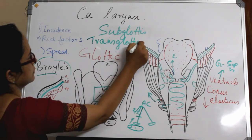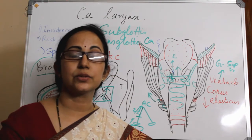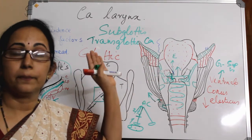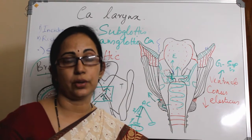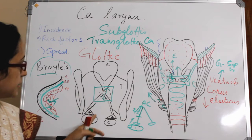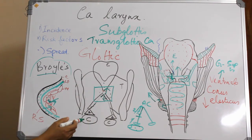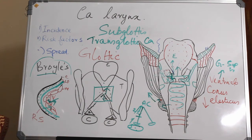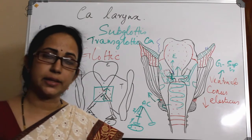Another important terminology is transglottic tumors. Transglottic carcinoma by definition is a carcinoma involving the supraglottis and the glottis because of vertical spread through the ventricle, with fixity of the vocal cord. The arytenoid may or may not be fixed; cricoarytenoid joint involvement may or may not be present. The fixity is due to involvement of the vocalis muscle and paraglottic spread.